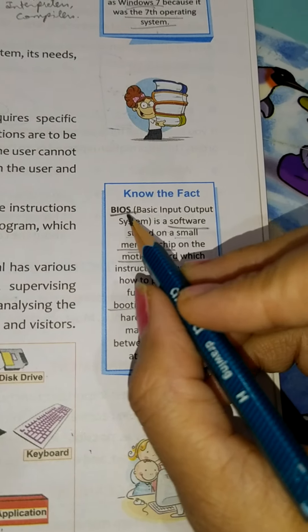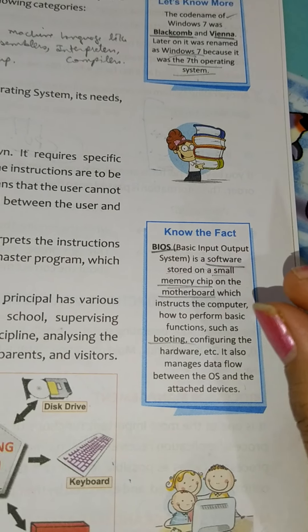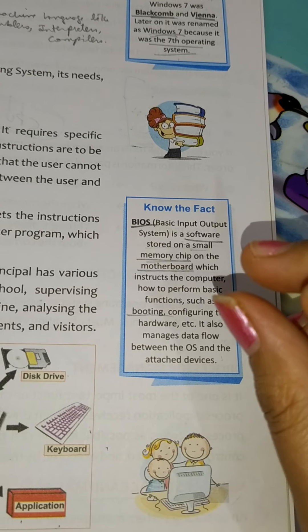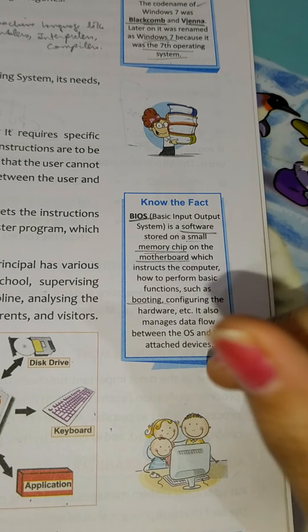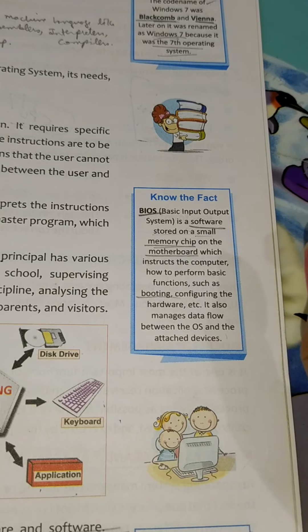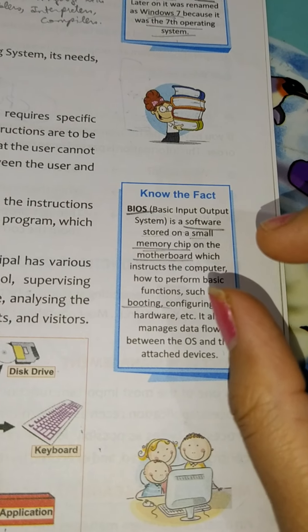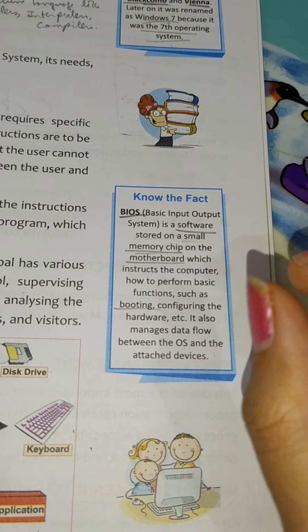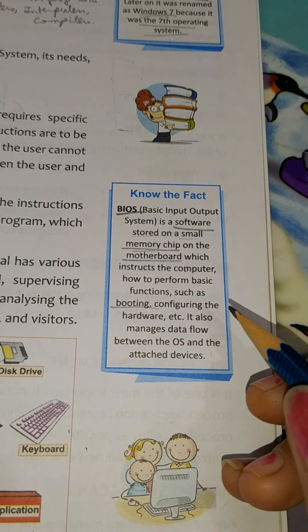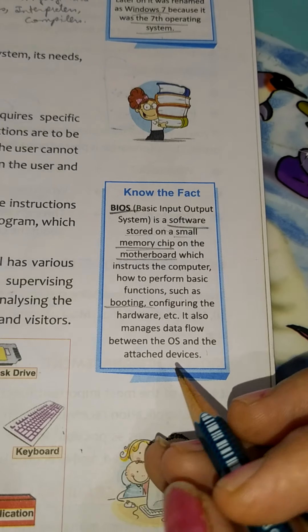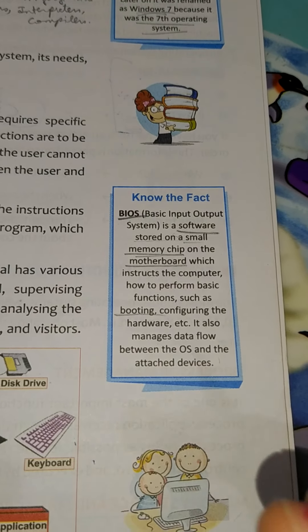Next is BIOS. You have to learn the full form: Basic Input Output System. It is like software and it is stored on a small chip on the motherboard. It has all the instructions stored for your booting procedure — how to manage data flow of the operating system and how to attach devices. All that information is stored on the chip.